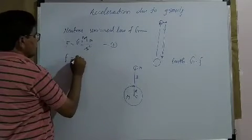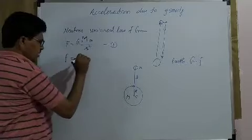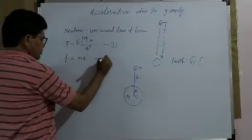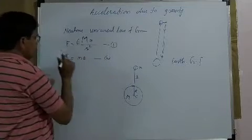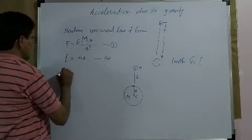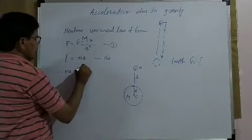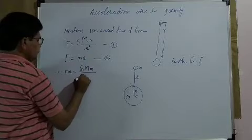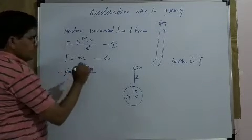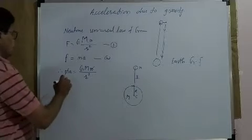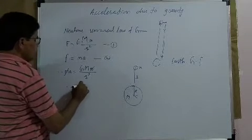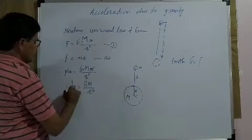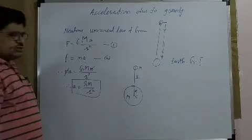From Newton's second law of motion, F is equal to Ma, where m is the mass of the object and a is the acceleration. From equations 1 and 2, the left sides are equal, therefore the right sides are also equal. Therefore Ma is equal to GMm divided by r squared. Mass of the object gets cancelled from both sides, giving a is equal to GM divided by r squared.